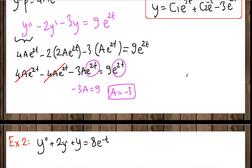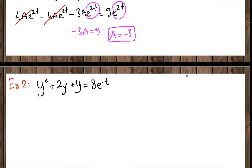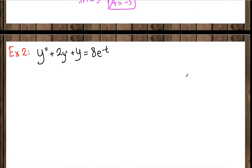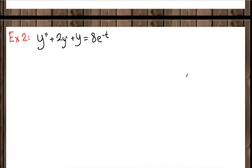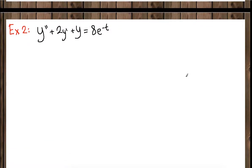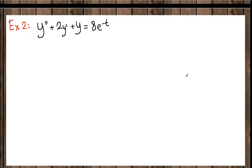Example 2: y double prime plus 2y prime plus y equals 8e to the negative t.